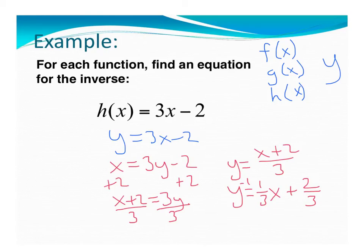Since we're dealing with an h of x here, we can write our inverse function as h to the negative 1 of x equals 1 third x plus 2 thirds.